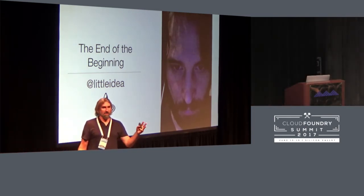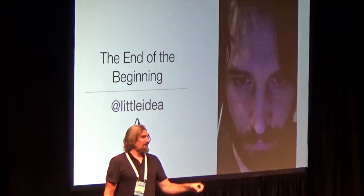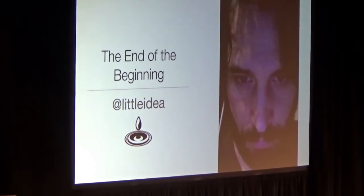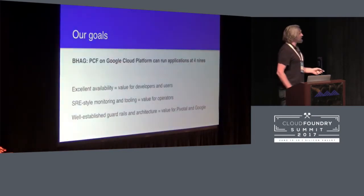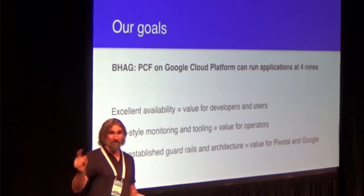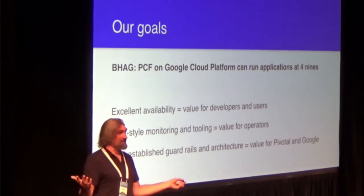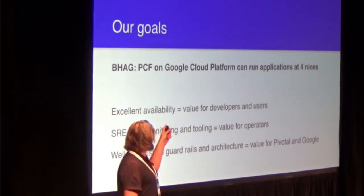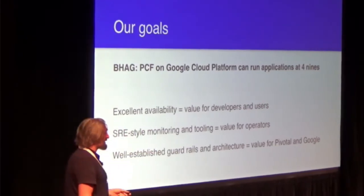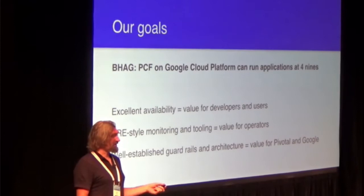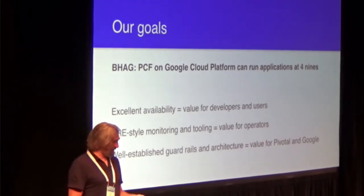I'm Luke, from Google Customer Reliability Engineering. The idea is we do SRE with our cloud customers so that their apps can run reliably on our system. Based on what Andrew just talked about, we need to work on three different things: your application, Pivotal software, and you — the operator — and your habits. We've set a goal of a technology partnership between Google and Pivotal with a big hairy audacious goal: we can run apps at four nines, which is pretty hard. The value prop is obvious — you can go faster, operators can go faster, and Pivotal and Google spend less time working around bugs from unintended consequences.